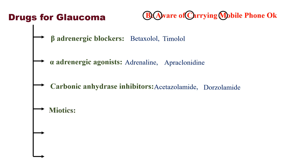M stands for miotics. Miotics are agents which constrict the pupil. Examples are pilocarpine and physostigmine.